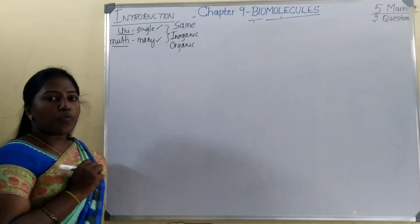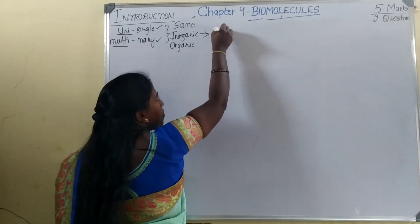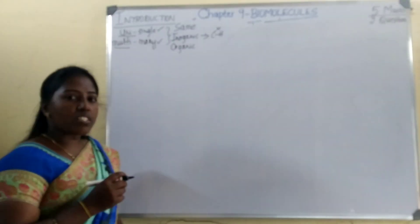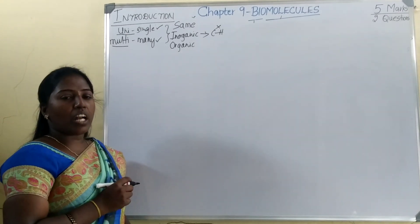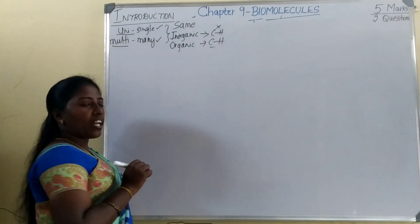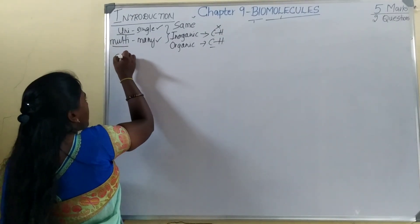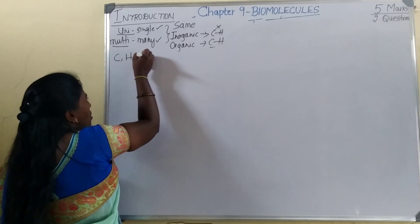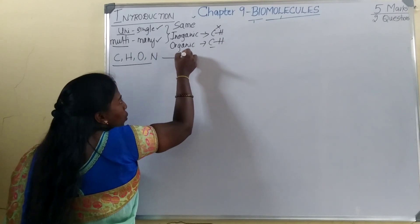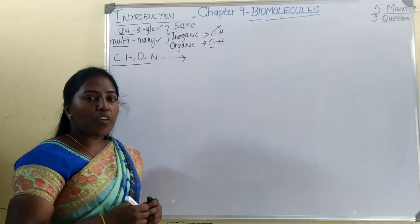What is the meaning of inorganic? The compounds which do not have a carbon-hydrogen bond are inorganic. Whereas organic means which consists of a carbon-hydrogen bond. The four elements — carbon, hydrogen, oxygen, and nitrogen — contribute around 97 to 99 percentage of the body of living organisms.